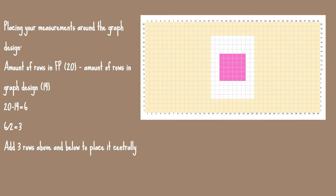Now we need to add rows. We want 20 rows for the front panel but the graph has 14 rows. Subtract 14 from 20, giving 6, then divide 6 by 2, which is 3. This gives you the number of rows to add at the top and the bottom of the graph. So you'll be adding 3 rows at the top and 3 rows at the bottom, totaling 6 extra rows added to the graph.